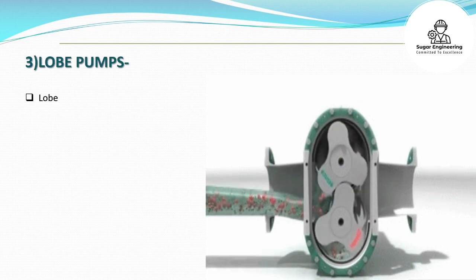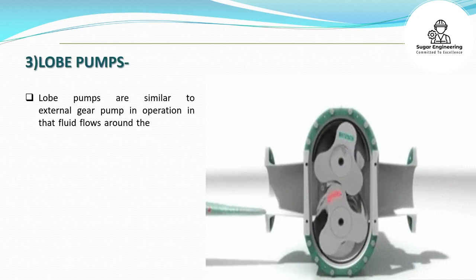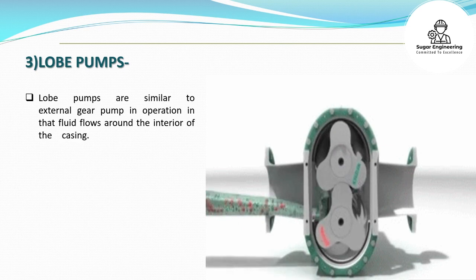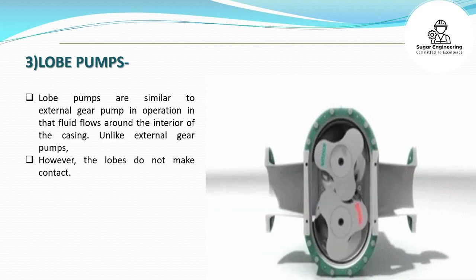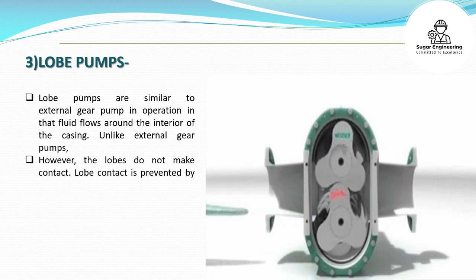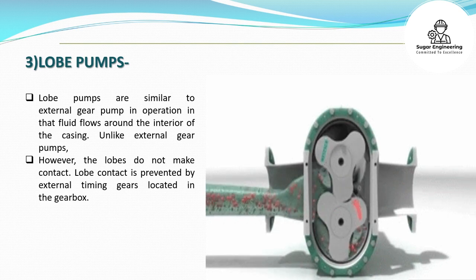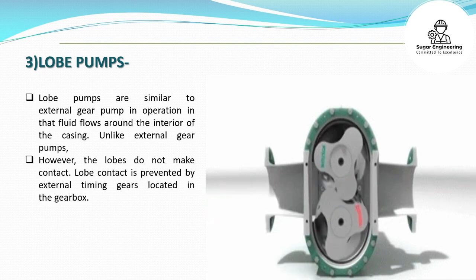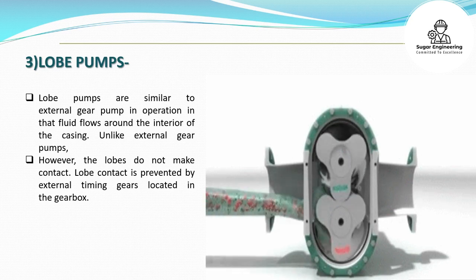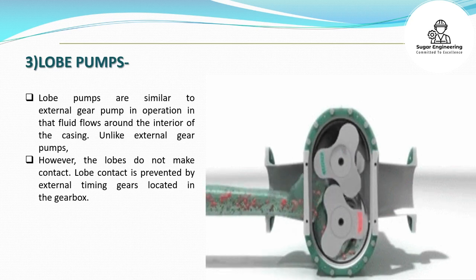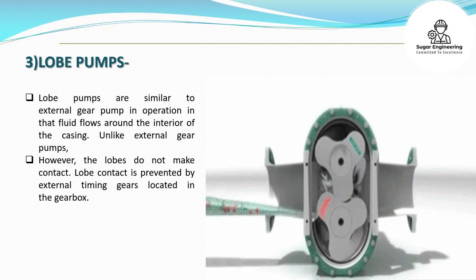3. Lobe Pumps: Lobe pumps are similar to external gear pumps in operation in that fluid flows around the interior of the casing. Unlike external gear pumps, however, the lobes do not make contact. Lobe contact is prevented by external timing gears located in the gearbox.